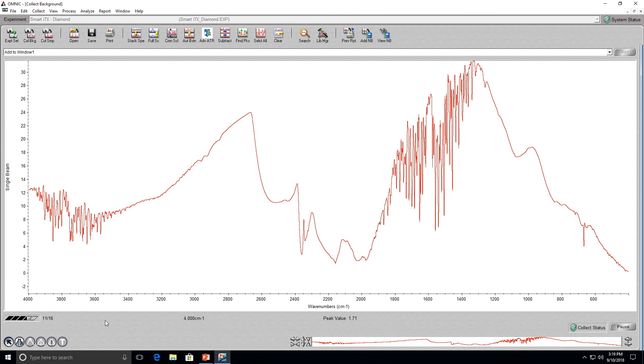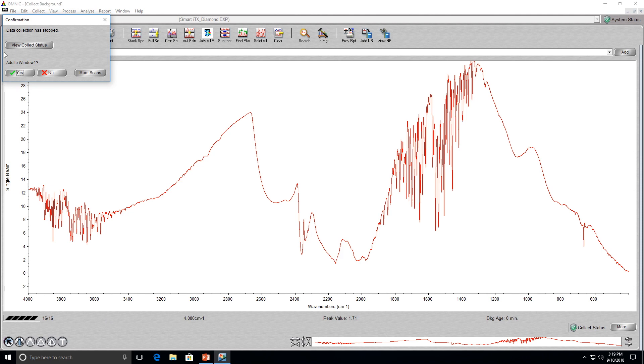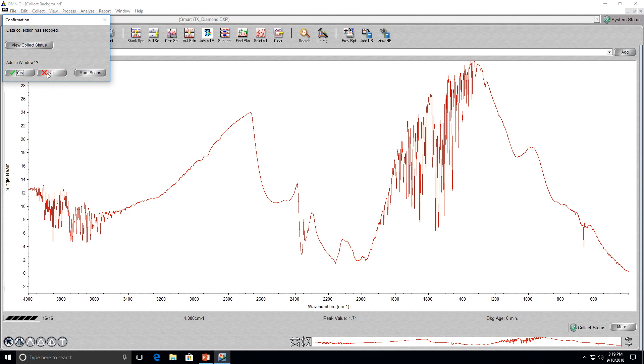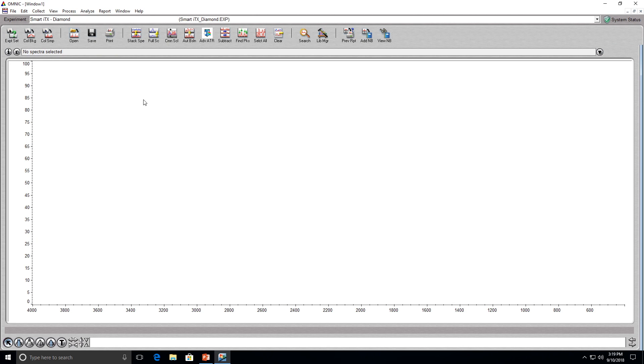Once the scan is complete the background spectrum should look like this. A box will then pop up and ask if you want to add the background spectrum to a new window. Since we don't need the background spectrum for our data, click no. Watch the next video to find out what you should do after taking the background scan.